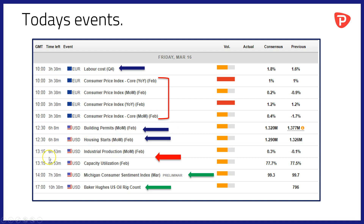We'll also hear at 1.15pm about industrial production and capacity utilisation numbers for February out of the States. 2.00pm sees the widely followed Michigan Consumer Sentiment Index being released — this data is for March. And at 1.700pm the influential Baker Hughes oil rig count will shine a light on US oil production over the last week.